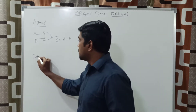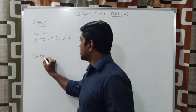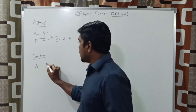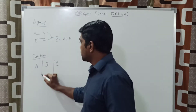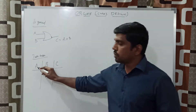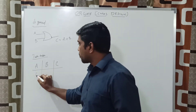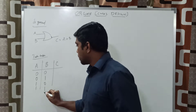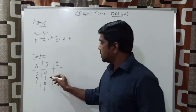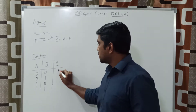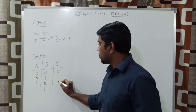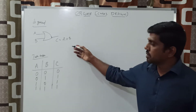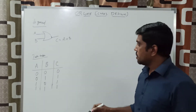Then write the truth table. The inputs are A and B, and the result is C. We are using two variables, which produces four combinations of input: 0,0 — 0,1 — 1,0 — 1,1. Now we find the output: 0 plus 0 is 0; 0 plus 1 is 1; 1 plus 0 is 1; 1 plus 1 is 1. In this logical function, it won't produce a carry — it only produces the sum.